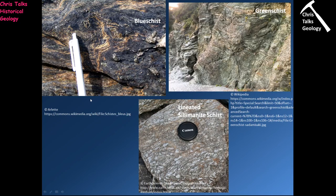Lineated rocks also occur occasionally. A lineated sillimanite schist has big gray sillimanite crystals. Just like the amphibole schist, you can see the foliation on the top and sides but not the end - confirming this is a lineated rock with long, slender crystals. Like holding a bundle of pencils, you can see the lines on the side and top, but looking end-on you can't see the layers.